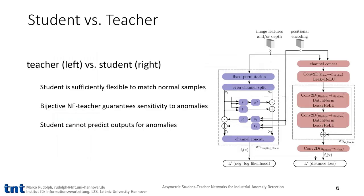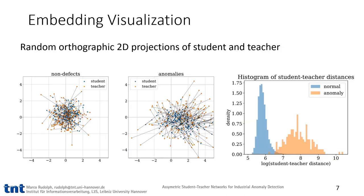This illustrates the architecture of student and teacher. For normal data, the student is sufficiently flexible to match the teacher's output. Since the teacher is a bijective network, its output is sensitive to every input change. This output cannot be predicted by the student on anomalies. These are random projections of the output of student and teacher for non-defects on the left and anomalies in the middle. As clearly visible, the distance, visualized by the lines, is much higher for anomalies, which is supported by the histogram of distances on the right.